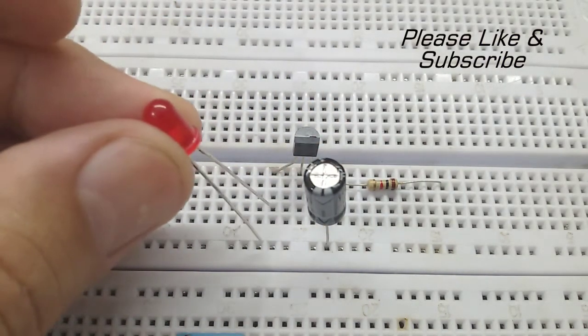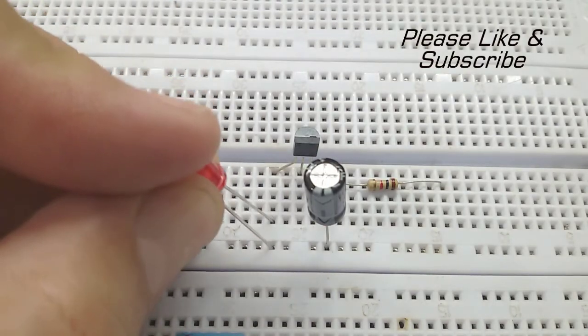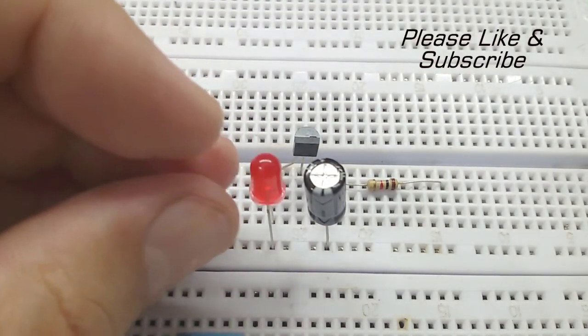And at last, connect the positive pin of the LED with the collector of the transistor and the negative pin of the LED with the negative pin of the capacitor.